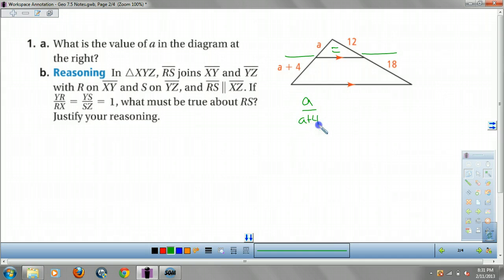A over A plus 4. Parallel lines, the equal sign, equals 12 over 18.